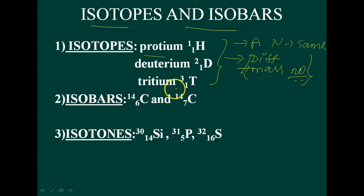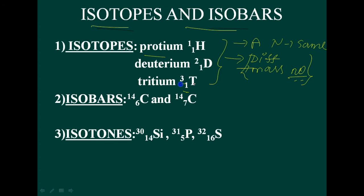The third isotope of hydrogen has one proton and two neutrons, and that is called tritium.